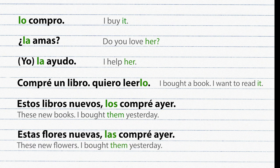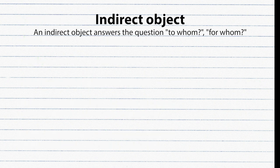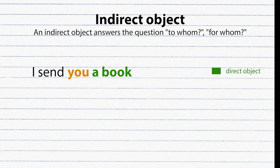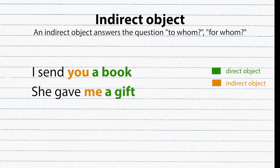Some verbs take two objects — a direct object and an indirect object. For example: 'I send you a book' — 'a book' is the direct object (what do you send?), and 'you' is the indirect object. An indirect object answers 'for whom' or 'to whom.' Another example: 'She gave me a gift' — a gift is the direct object, me is the indirect object. For indirect objects we use indirect object pronouns.